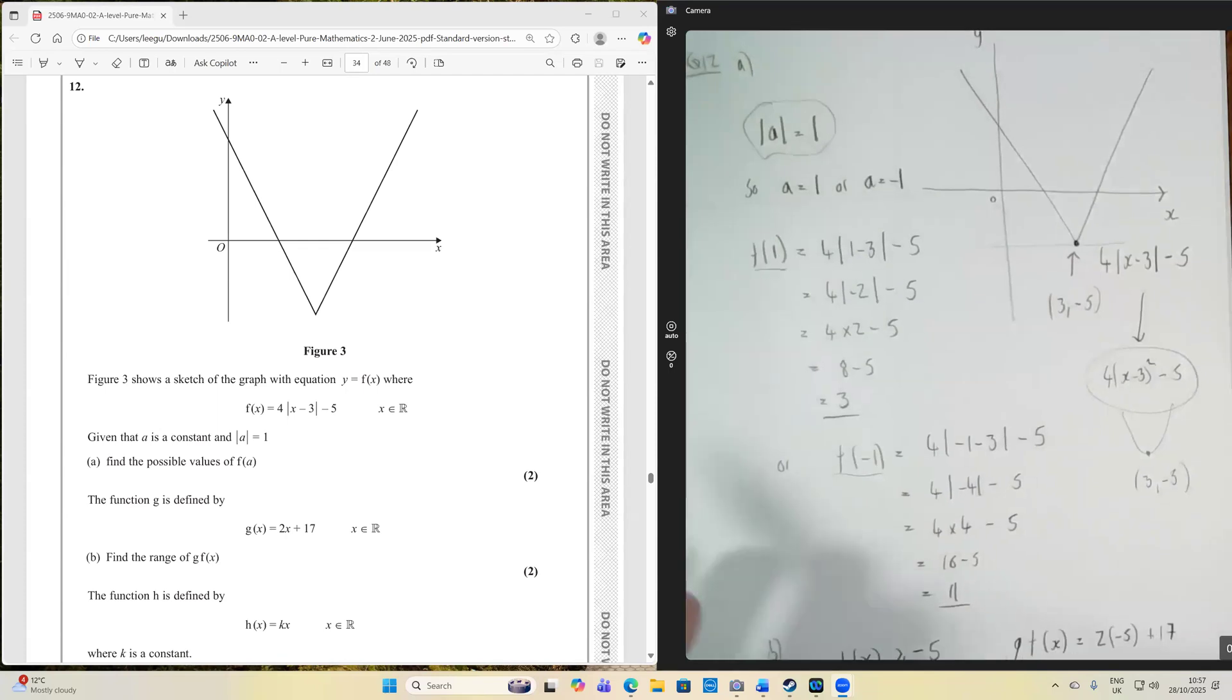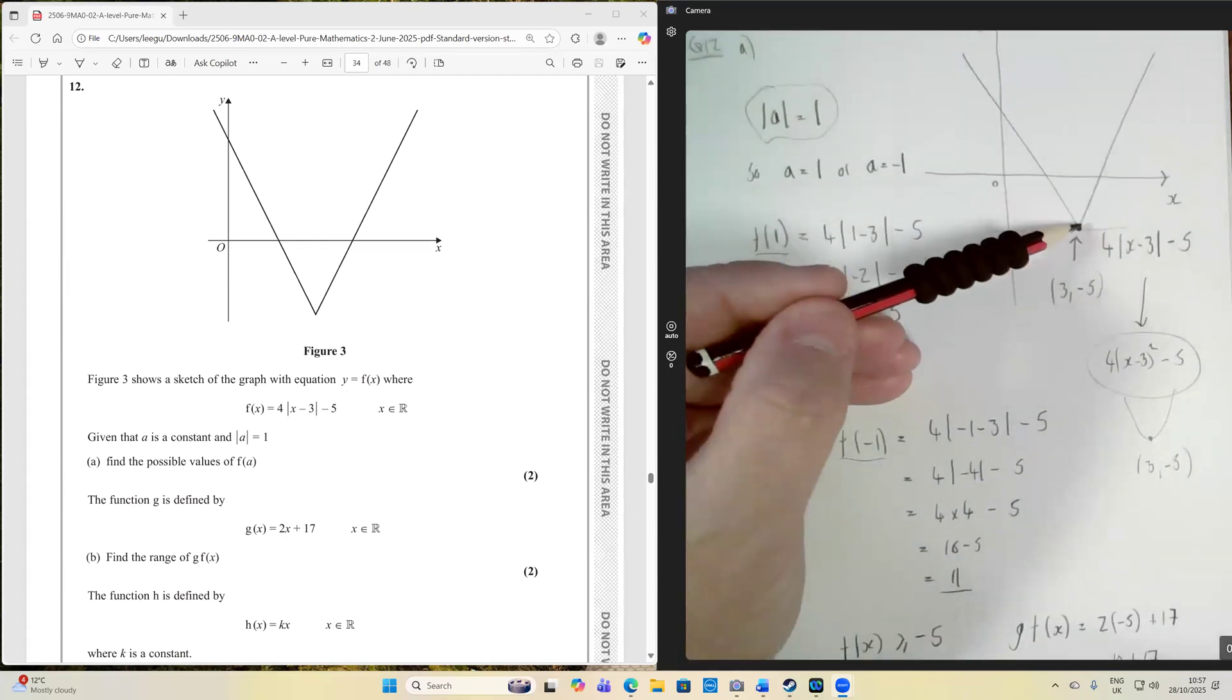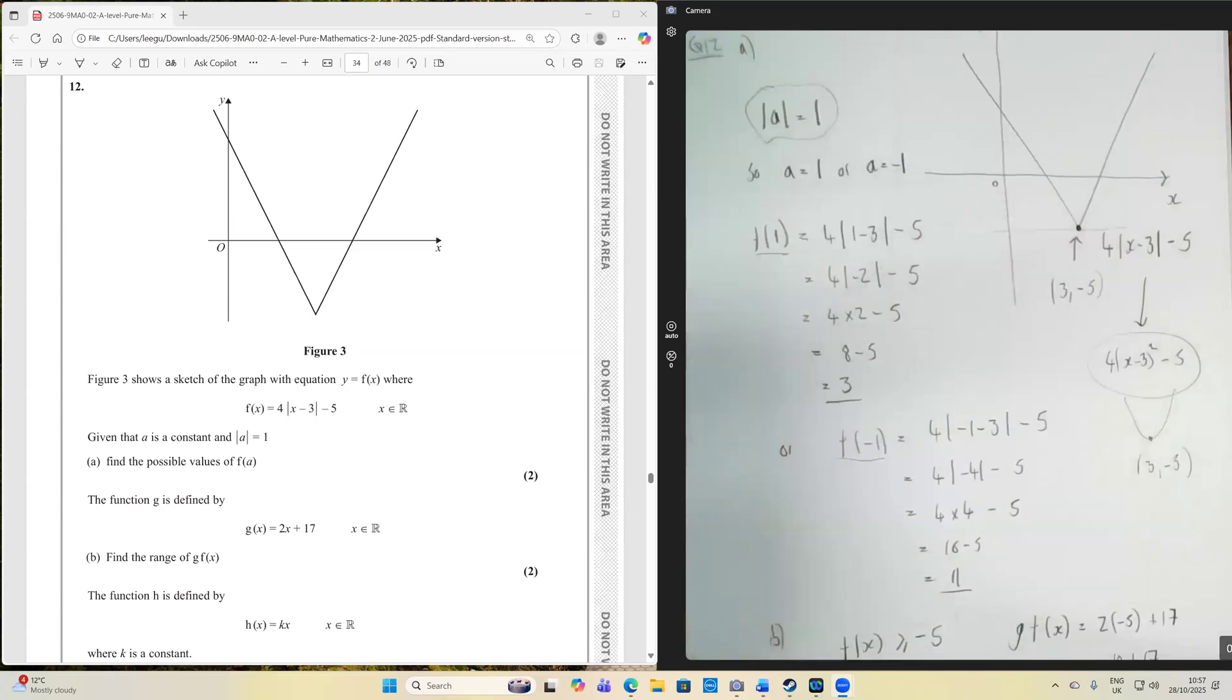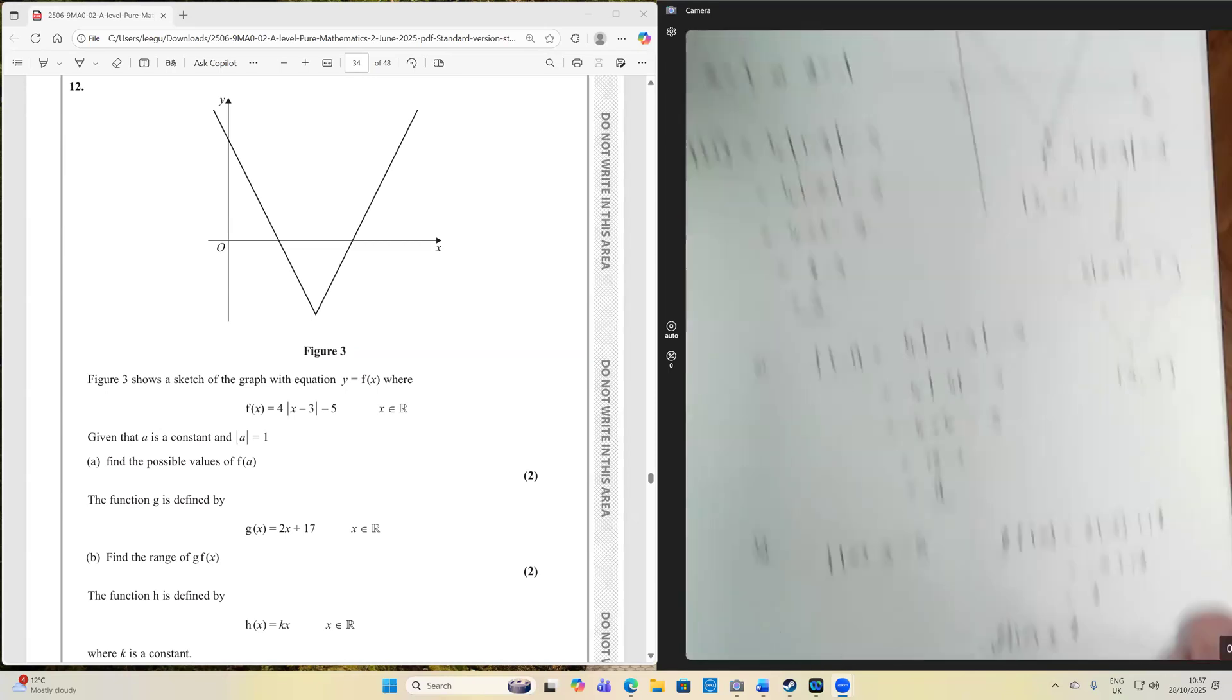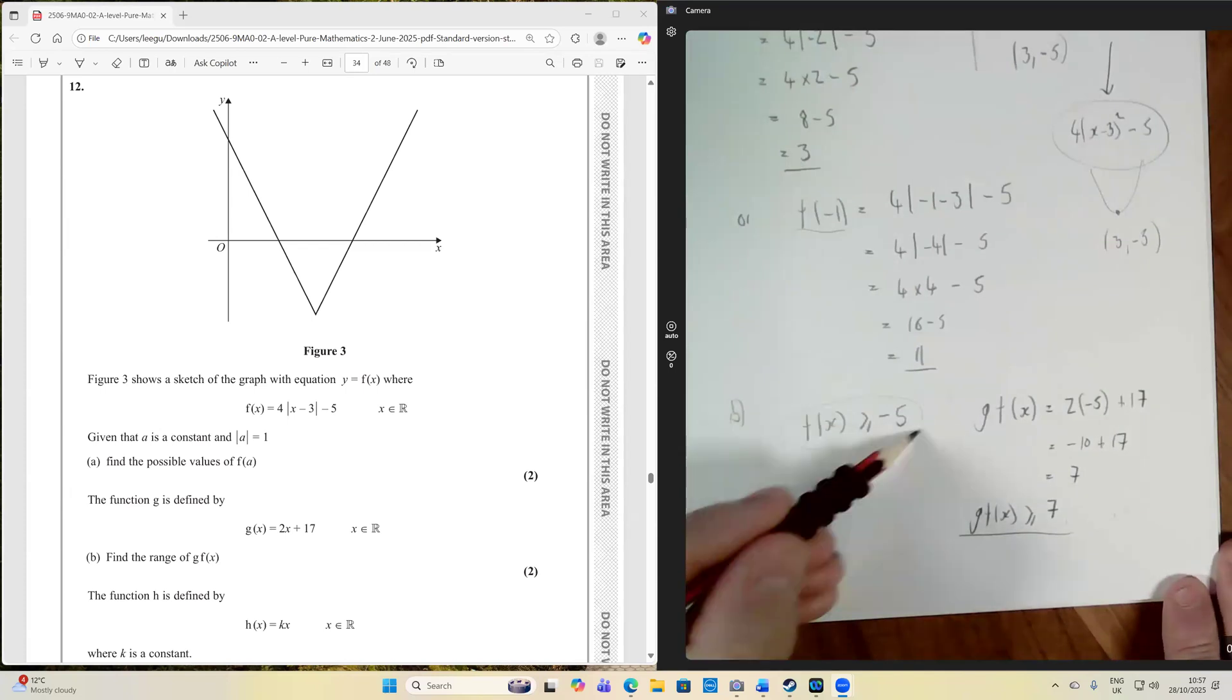So that means that the smallest value of f of x is going to be minus 5. So we can say, therefore, that f of x is greater than or equal to minus 5.